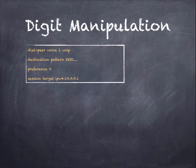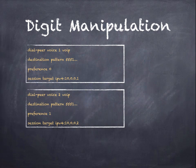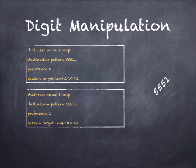Another digit manipulation feature is the preference number. If you have two identical dial peers going to two different session targets, preference 0 would be the one used for the match. So if you dialed 555-1 and then any three digits, it would always match preference 0. You can use preference on otherwise equal dial peers to elevate one over another.